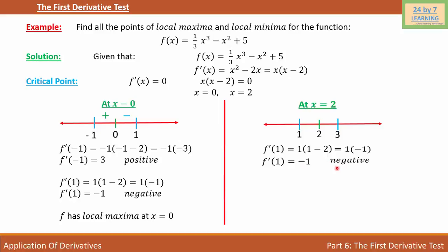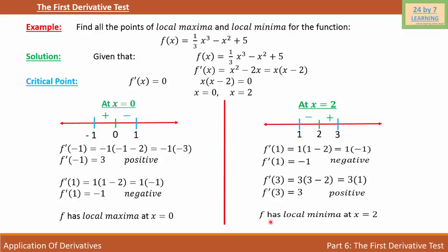So the first order derivative at 1 is negative. Let's find the value of the first derivative at 3: f'(3) = 3 times (3 - 2) = 3 times 1 = 3. As you can see, 3 is a positive number. The first order derivative changes from negative to positive, so f has a local minima at x = 2.